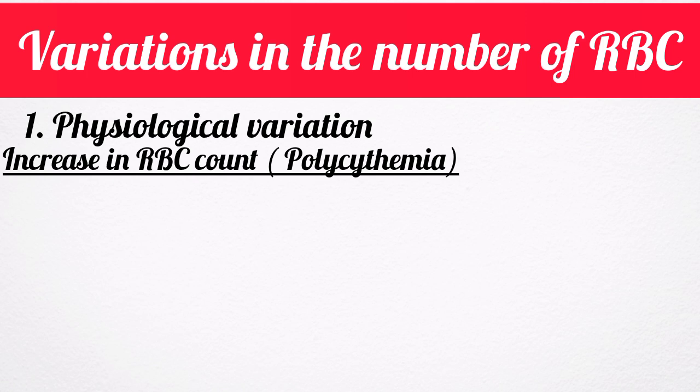It occurs in the following conditions. Number one: age. At birth, the red blood cell count is 8 to 10 million per cubic millimeter of blood. The count decreases within 10 days after birth due to destruction of red blood cells, causing physiological jaundice in some newborn babies. However, in infants and children, the cell count is more than the value in adults.